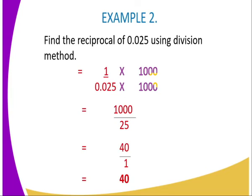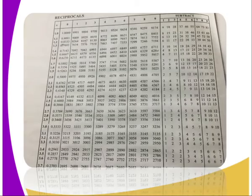On to the second example: find the reciprocal of 0.025 using the division method. You write 1 over 0.025, then eliminate the decimal points in the denominator by multiplying both numerator and denominator by 1,000. After multiplying by 1,000, you get 1,000 as the numerator and 25 as the denominator. Dividing 1,000 by 25, you get 40, and dividing 40 by 1 gives the final answer as 40.